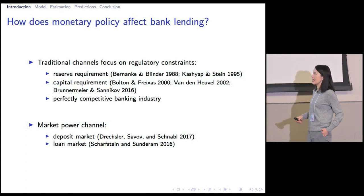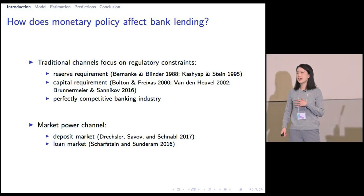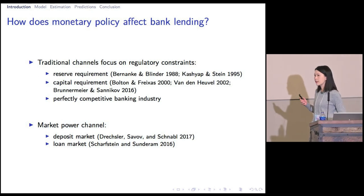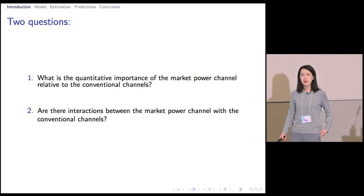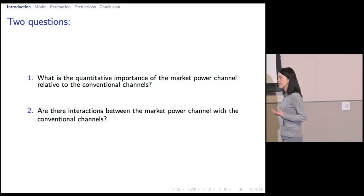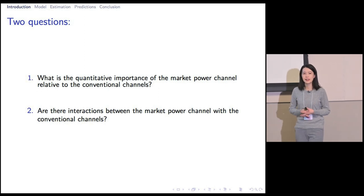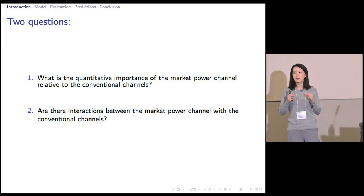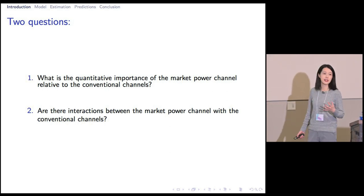So far, we have papers looking at what happens on the deposit market and lending market, and they find qualitative evidence that supports this market power channel. In this paper, we want to address two questions. First, we want to understand quantitatively how important is this market power channel relative to the previously studied regulation-based transmission mechanisms. And second, we want to breach the different channels and see if there is any interesting interaction that arises from there.